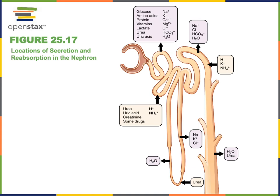After filtration, the liquid known as filtrate is modified as it flows through the nephron and collecting duct in order to produce urine. The process of reabsorption is the transport of substances from the filtrate back into the blood, and the opposite process, secretion, is the transport of substances from the blood into the filtrate to be removed from the body in the urine.